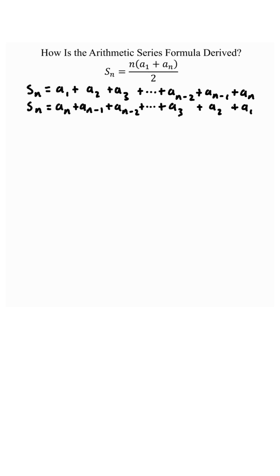Let's add the exact same copy but in reverse order. So instead of a sub 1 plus a sub 2 plus a sub 3, we'll start at the end: a sub n plus a sub n minus 1 plus a sub n minus 2 all the way down to a sub 3 plus a sub 2 plus a sub 1.